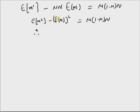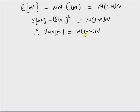Therefore, this is the definition of variance, and variance of m is equal to mu times 1 minus mu times n. For a random variable with binomial distribution, the variance is given as the product of mu, 1 minus mu, and n, where mu is the mean of the random variable following a Bernoulli distribution.